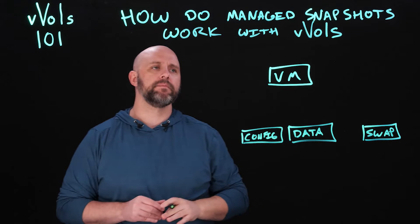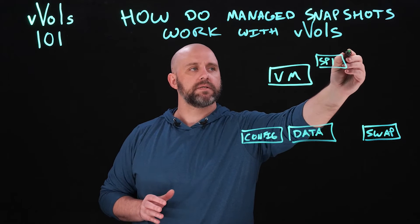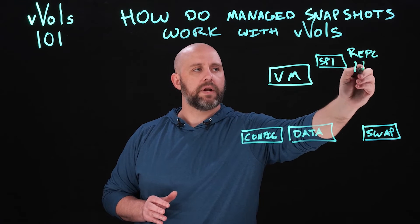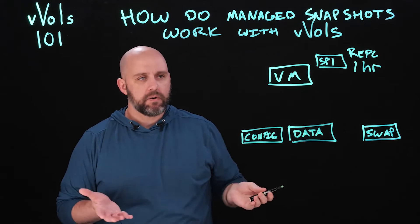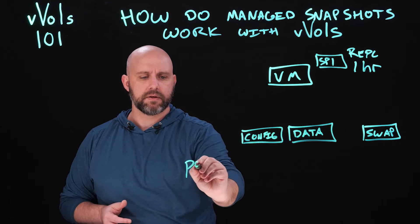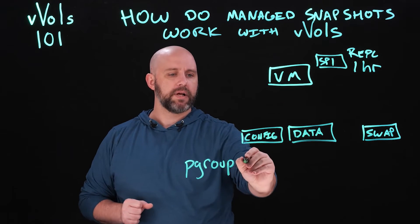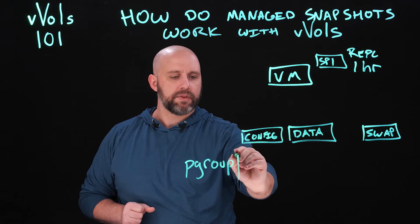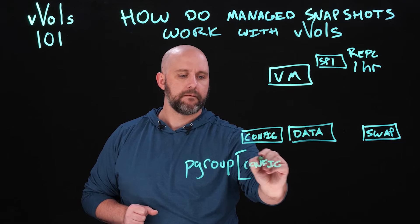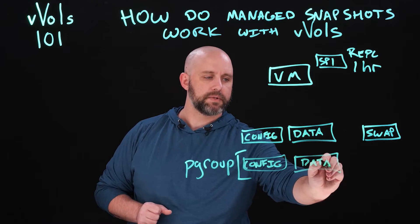For this VM, we're actually going to have a storage policy applied to it. This storage policy has replication — let's say one hour — being applied to it. So on the array, we would make sure that there's a protection group that was provided and selected when applying the policy. Within that protection group, that config and data vVol are already a part of it when that policy was applied.